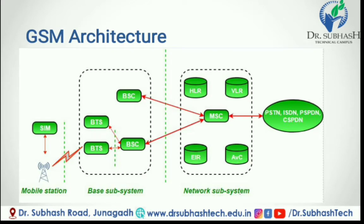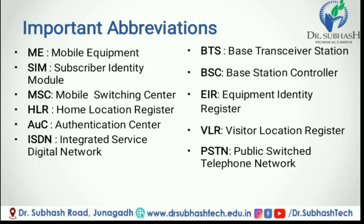Next topic is GSM architecture. In the figure, we can see the architecture of GSM. The components include: ME (Mobile Equipment), SIM (Subscriber Identity Module), MSC (Mobile Switching Center), HLR (Home Location Register), AUC (Authentication Center), ISDN (Integrated Service Digital Network), BTS (Base Transceiver Station), BSC (Base Station Controller), EIR (Equipment Identity Register), VLR (Visitor Location Register), and PSTN (Public Switch Telephone Network).